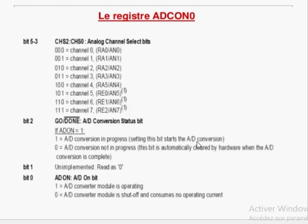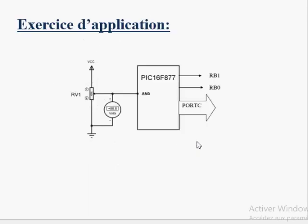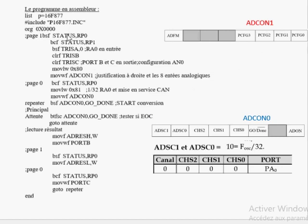Voilà l'explication du registre ADCON0. Concernant l'exercice d'application : on dispose d'une tension analogique à convertir. Le résultat de la conversion sera placé dans le port C et le port B, soit 8 bits plus 2 bits, ce qui fait 10. Avant tout, il faut configurer. On suppose RA0 comme entrée analogique. Il faut configurer les ports A, B, C en entrée ou en sortie.